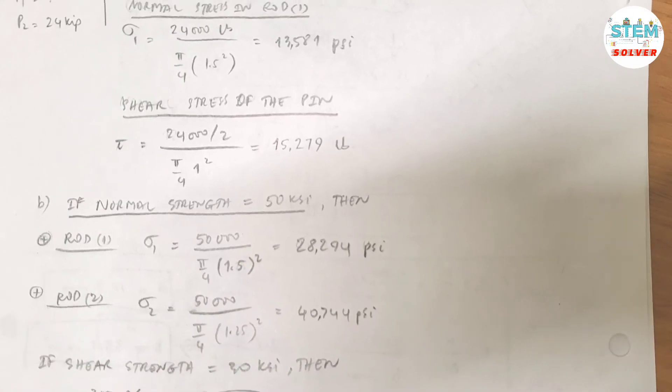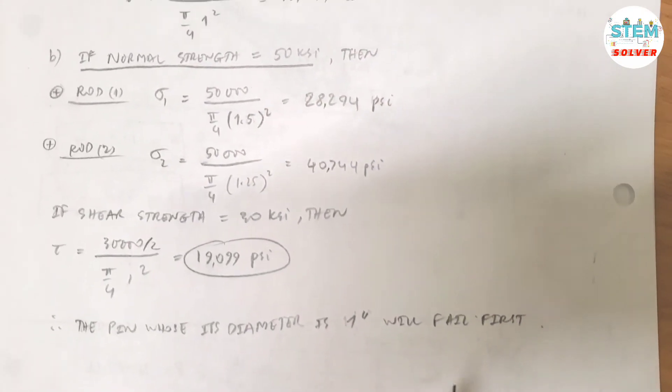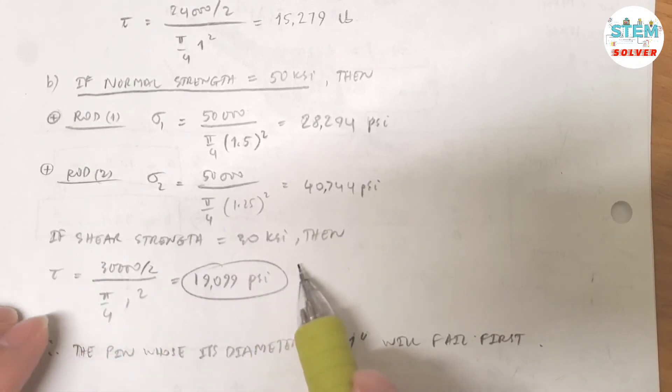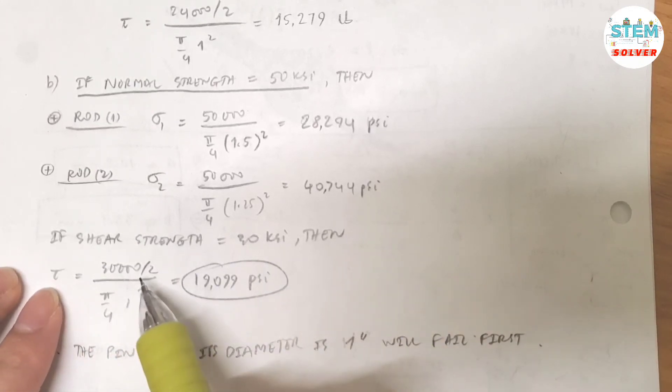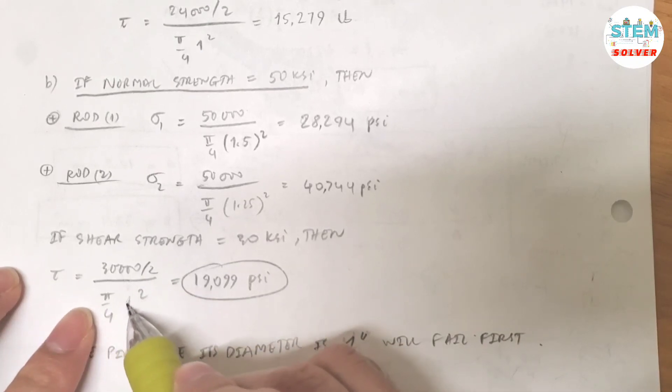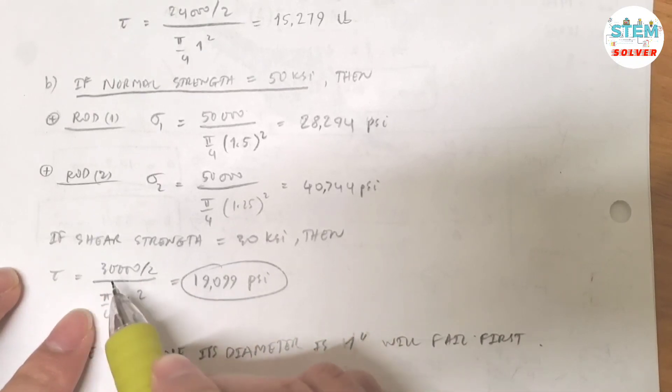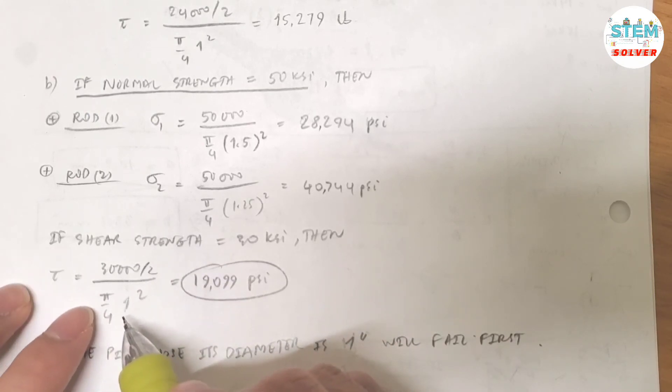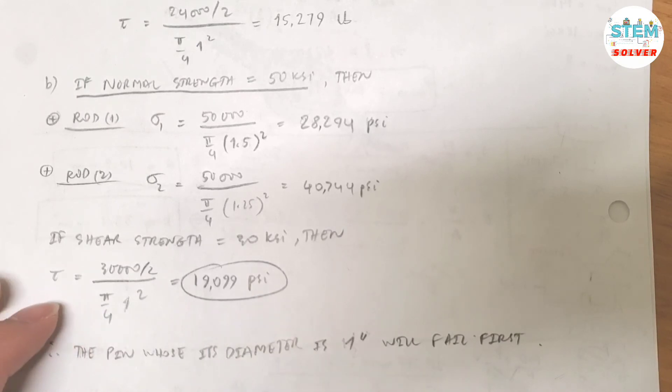Now what is the shear stress when the shear strength is equal to 30 psi? Well, the shear stress is equal to shear force divided by the area. Shear force, you have double shear, so you have to divide the shear strength by 2, divided by the area of the pin of 1 inch diameter, which is equal to pi over 4 times 1 squared. It gives you 19,099 psi. Okay.